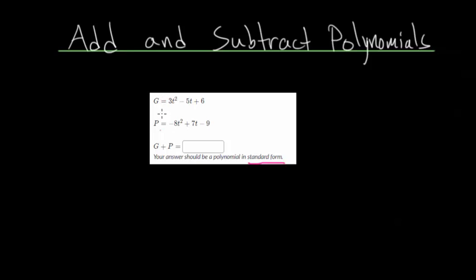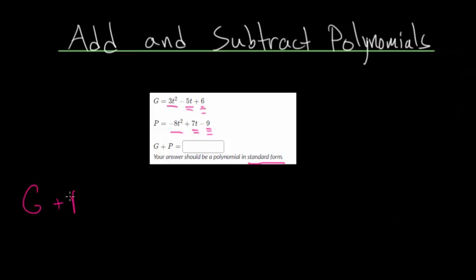When adding polynomials, the main strategy is to combine like terms. We'd want to combine the t squared terms, the t terms, and the constant terms. There are several different ways you can do this — you can line these up in a column, or you can add it by just combining like terms. Let me rewrite it using the more straightforward way, and then we'll add it by columns too so you can see both methods.